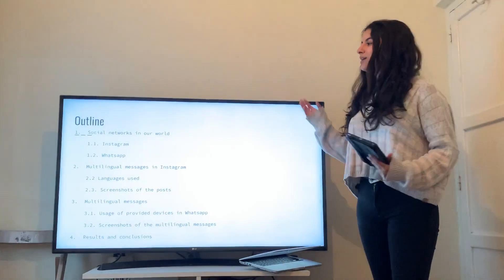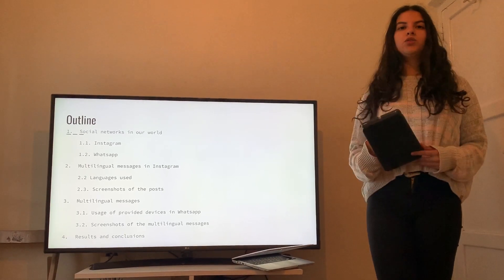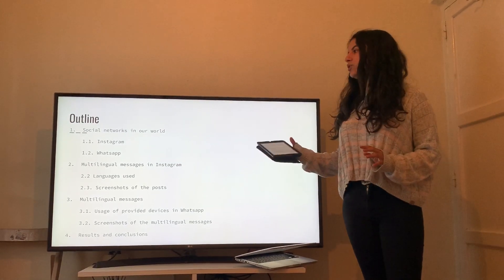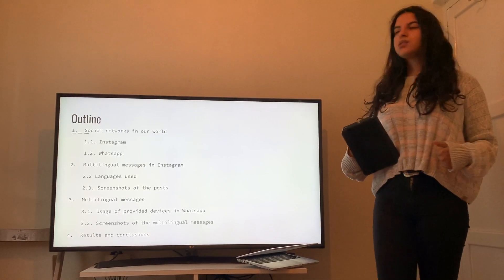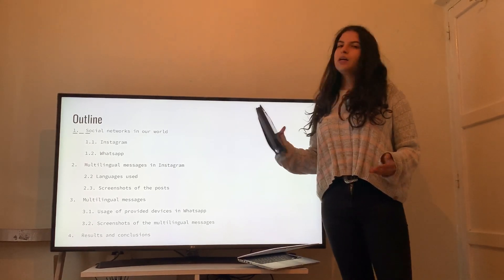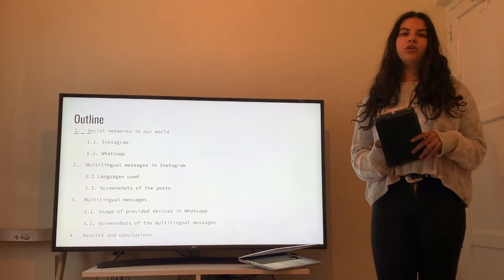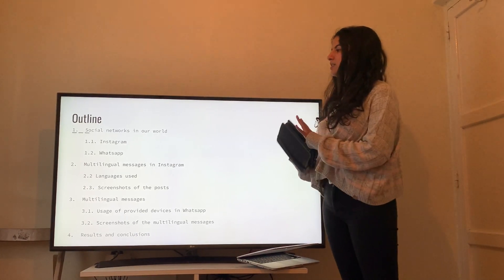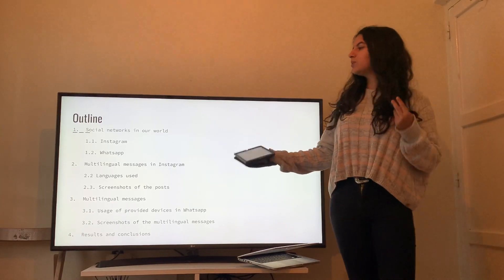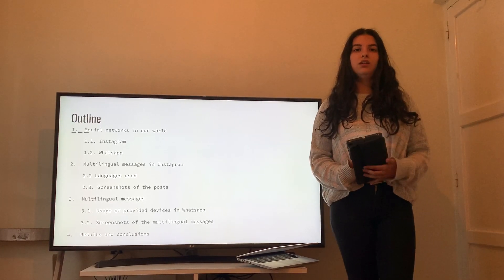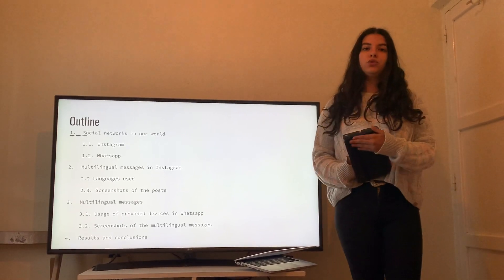The outline I'm going to follow is the following. First of all, I'm going to start by making a brief explanation of what social networks are and how they have influenced our world. Then I'm going to explain the two social networks featured in this project, which are Instagram and WhatsApp. After this, I'm going to show some multilingual messages I found on Instagram and which languages are used in those posts.